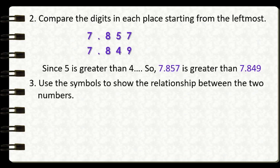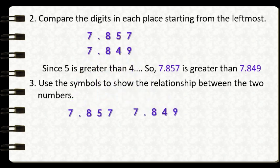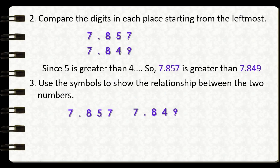That is, use the symbols to show the relationship between the two numbers. Our numbers are 7 and 857 thousandths and 7 and 849 thousandths. Since 7 and 857 thousandths is greater than 7 and 849 thousandths, we are going to use the greater than symbol.